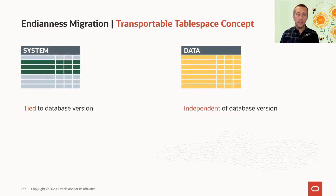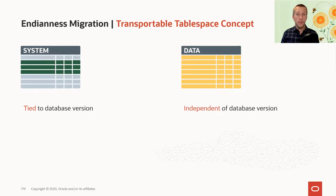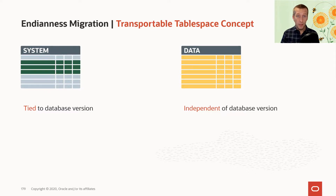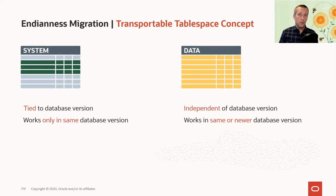The advantage of that is that the system tablespace is tied to one specific database version. If you look at the contents of a system tablespace in 12.1.0.2 and compare it to 19c, they are completely different. On the other hand, if you look at the data tablespace from a 12.1.0.2 database and compare it to the same data in a 19c tablespace, the format would be the same — it's independent of the database version. It might not be the case if you change the COMPATIBLE parameter, but that's out of scope for this discussion. So a system tablespace works only in the same version, whereas a data tablespace can be used in the same or a newer version.